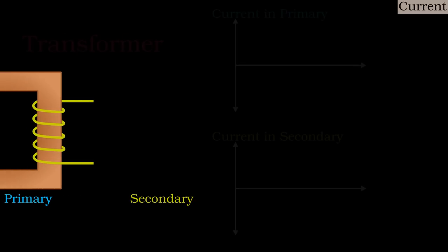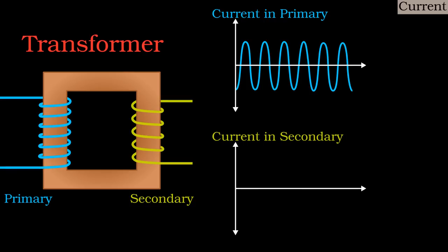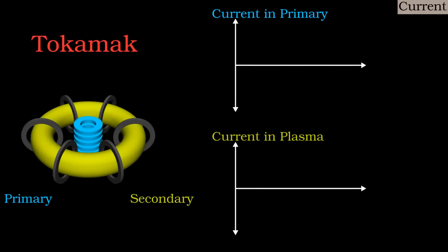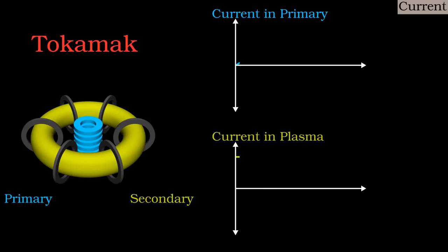A tokamak must have a large current flowing through the plasma. The simplest and earliest approach to do this is by electromagnetic induction. Outside the vacuum chamber are coils which act as the primary coil of a transformer, and the plasma torus is just like a giant secondary coil. As a consequence of Faraday's law, the current induced in the secondary is proportional to the rate of change of current in the primary. In an ordinary transformer there is alternating current in the primary, and as a result also the secondary coil.